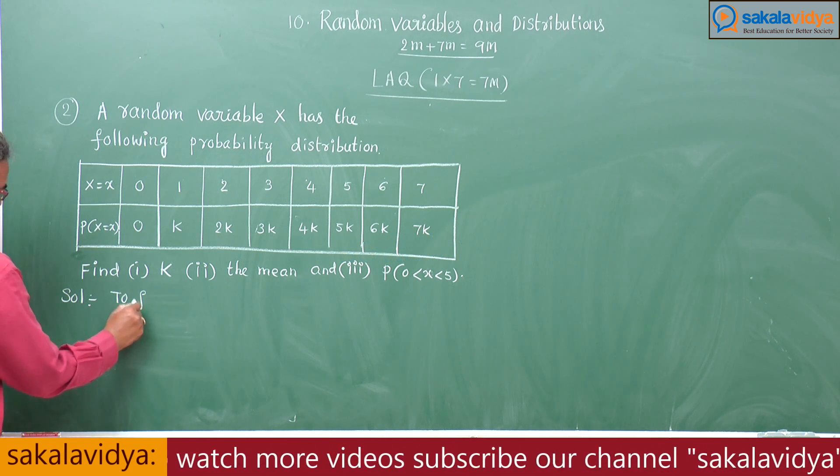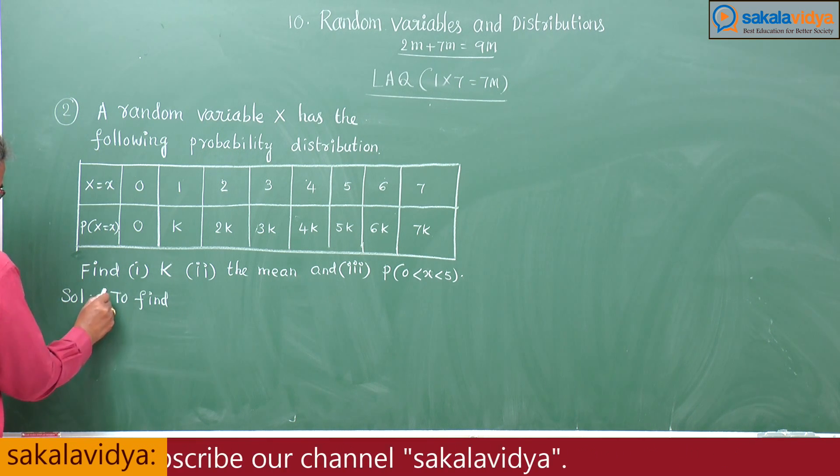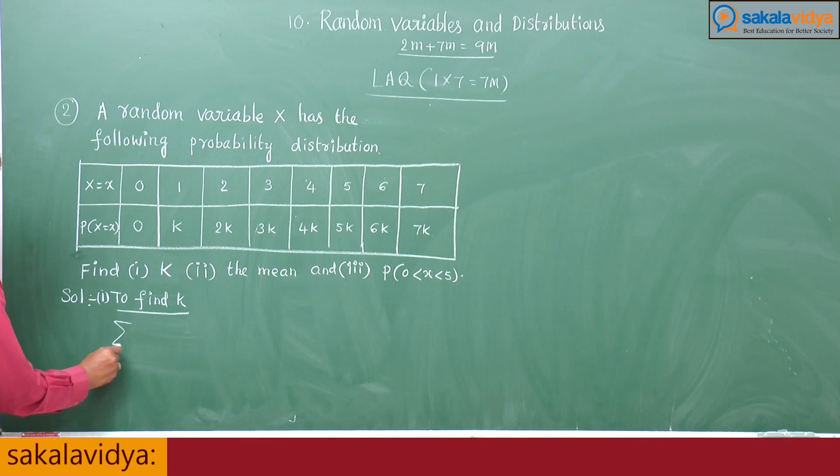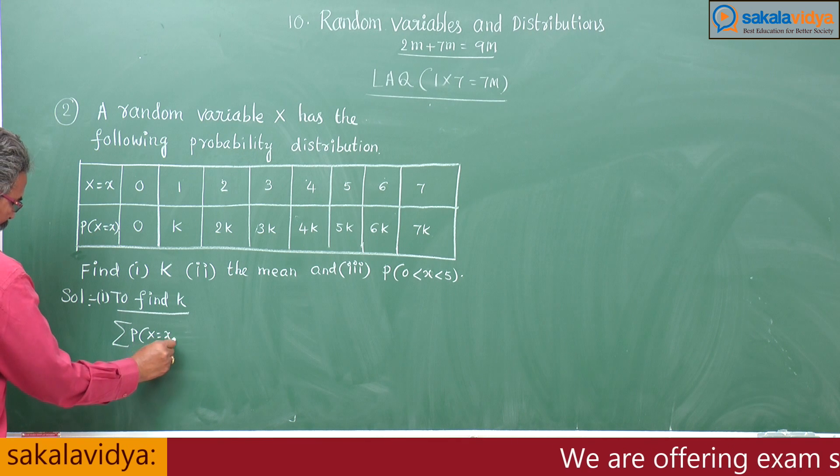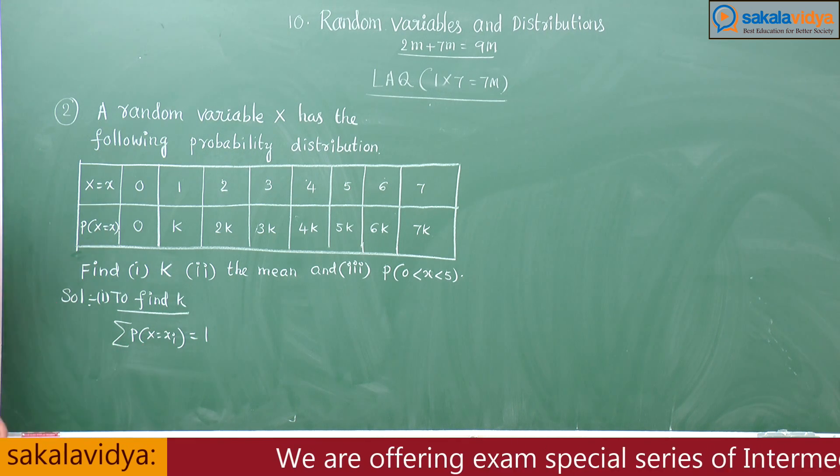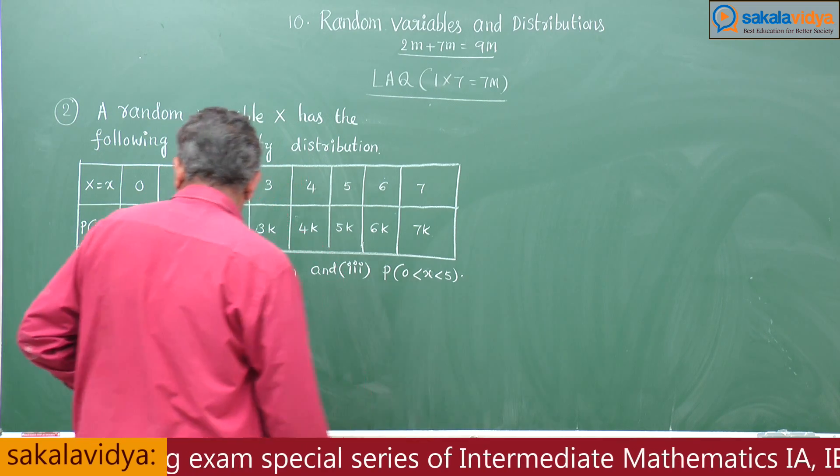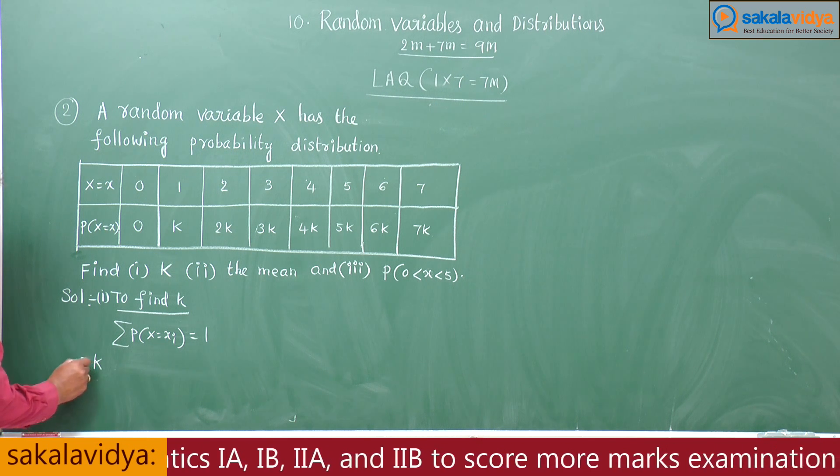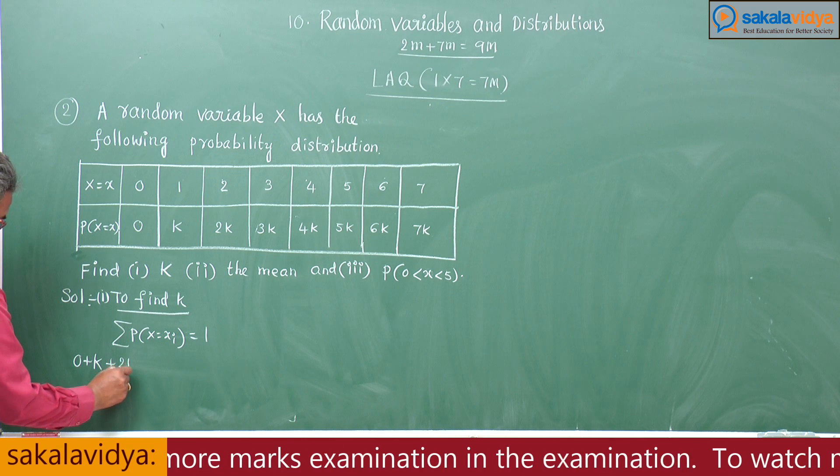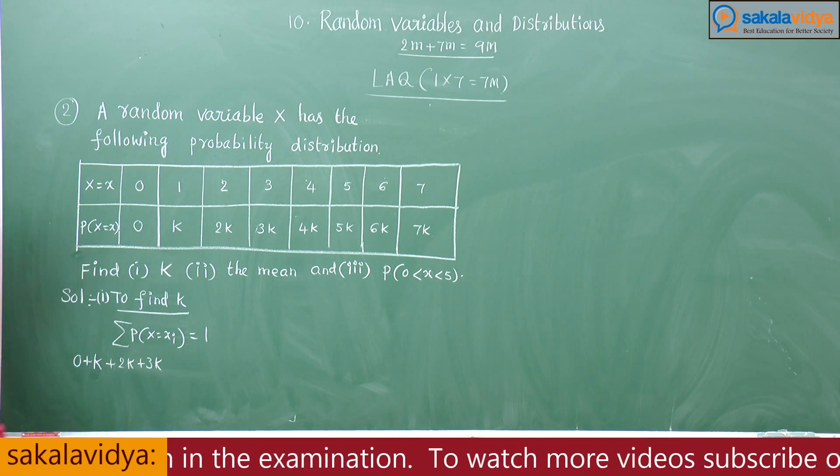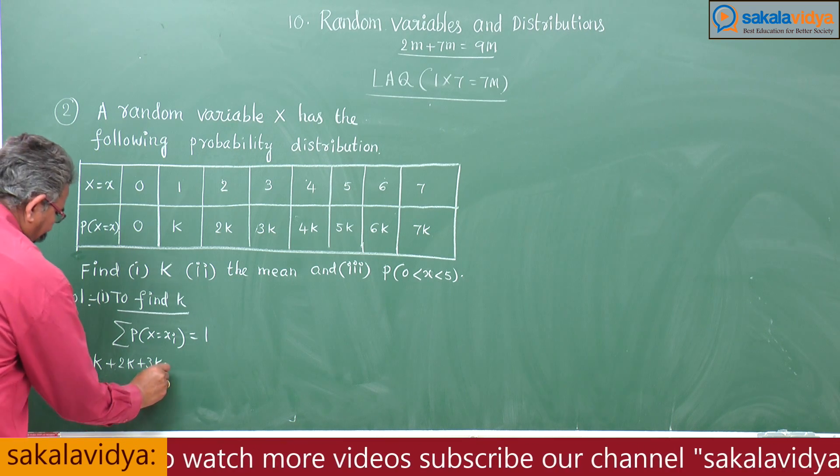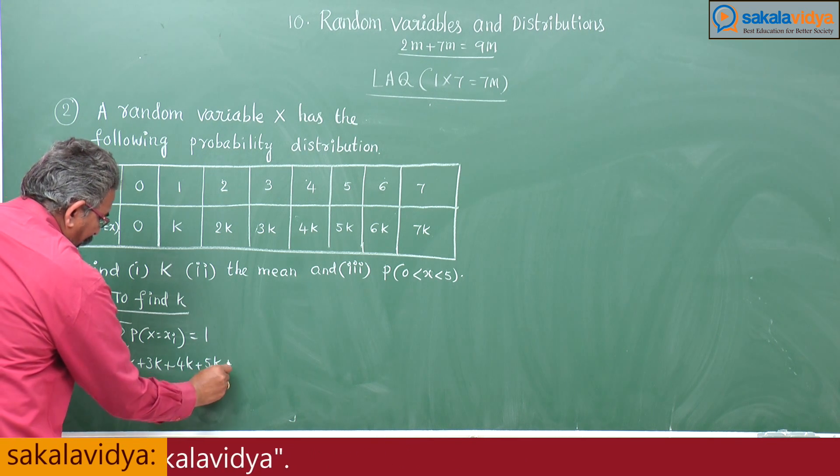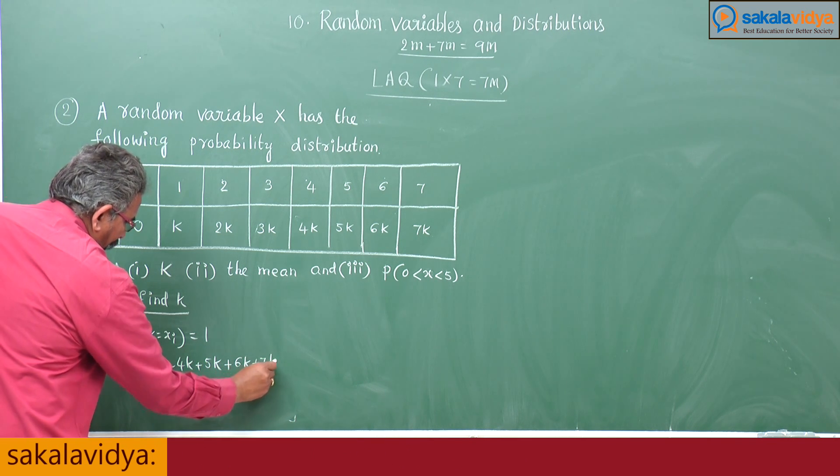First to find K. Since sigma P of X equals Xi equals 1, that means K plus 0 plus K plus 2K plus 3K plus 4K plus 5K plus 6K plus 7K equals 1.